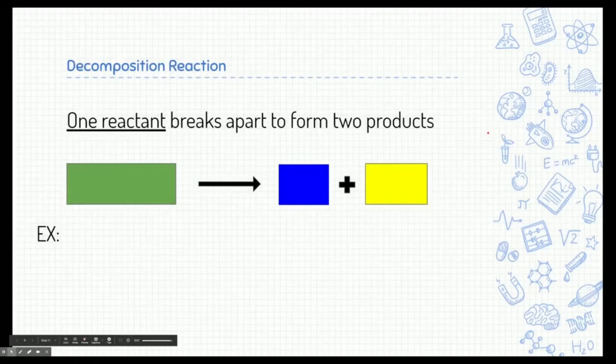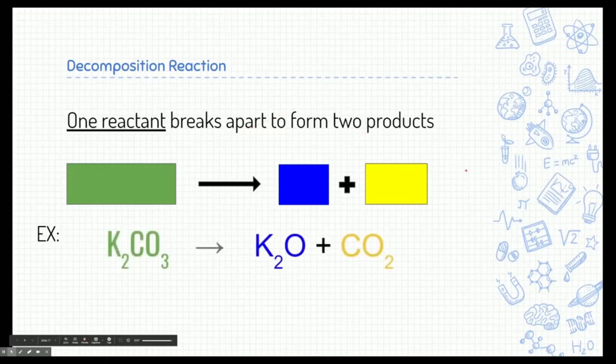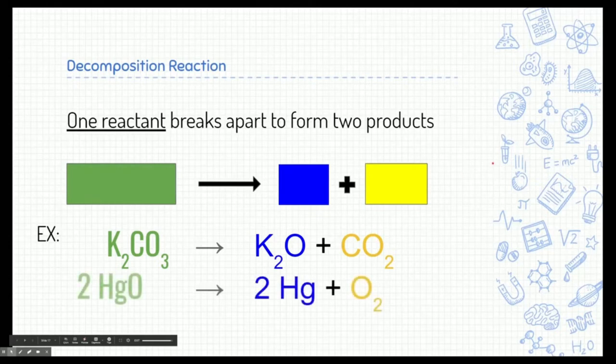All right. The opposite of a synthesis reaction is called a decomposition reaction. One reactant breaks apart to form two products. Now, again, I kind of emphasize the term one reactant. That's kind of a key indicator to let you know a decomposition reaction is taking place. So here we have potassium carbonate. There's nothing it's reacting with. So the only thing it can really do is break apart into multiple pieces. So potassium carbonate breaks apart into potassium oxide and carbon dioxide. You can say the same thing about mercury-to-oxide. So mercury-to-oxide breaks apart into mercury and oxygen.